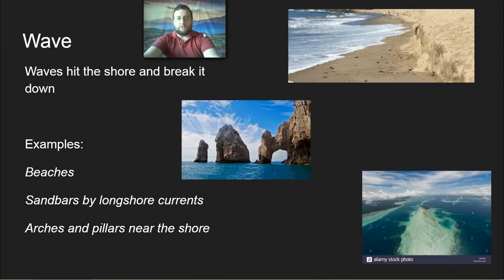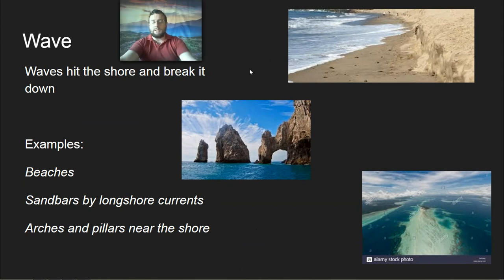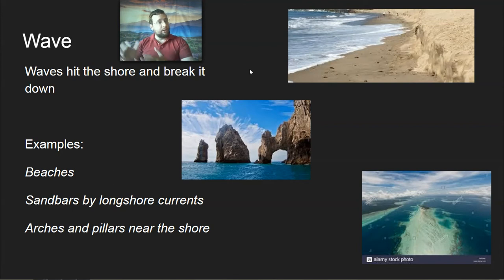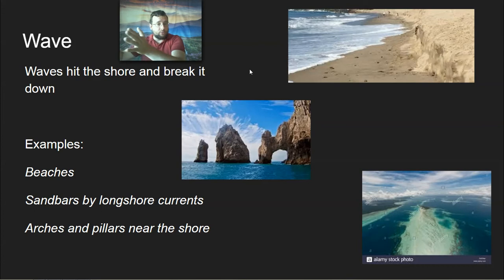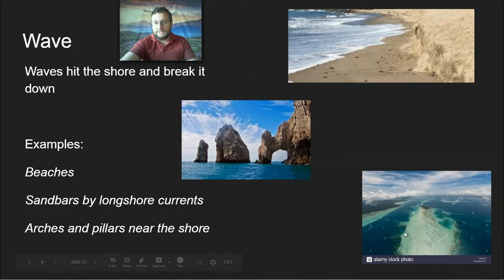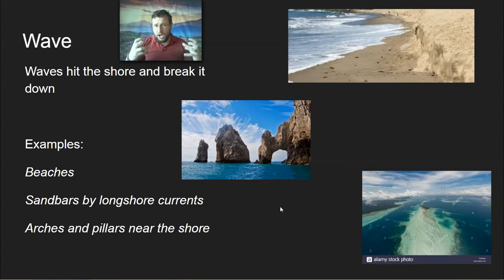Wave erosion occurs near shorelines and is the most prevailing type of erosion there. While wind and rain exist near the shore, waves matter more than anything else. Waves literally hit the shoreline and break it. When they hit sand they can cause berms to form, pushing the sand away. Longshore currents — currents that move sideways along the shore — pick up sediments and dump them into sandbars, which is another kind of deposition.